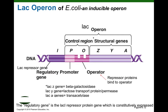The lac operon of E. coli was the first example of how bacteria can turn on and turn off transcription that was described — the first model of how cells can control gene expression. This model was worked on in the 1940s by two French microbiologists, Jacob and Monod. There's powerful history that goes along with it — they were working in Paris when Paris was invaded by the Nazis and what they had to do to protect their work. But we'll focus on understanding what we mean by an operon and how E. coli controls gene expression in the lac operon.